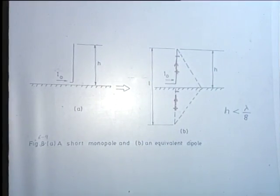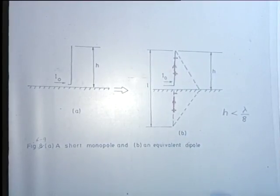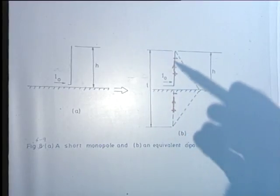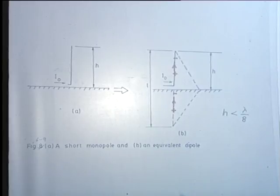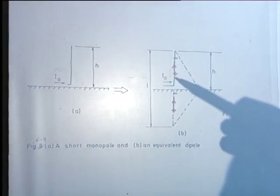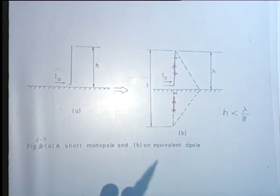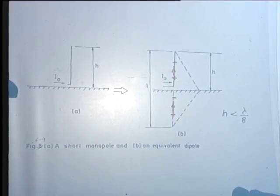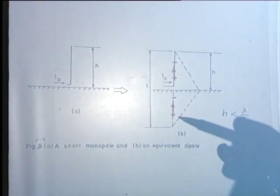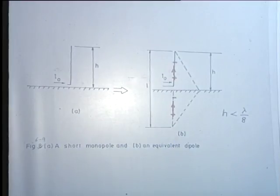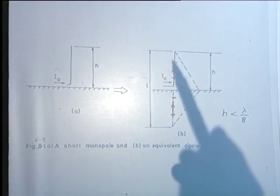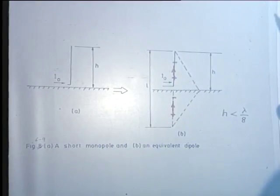A student asks about the image of the negative charge. Applying the image principle: the image of the positive charge is below the surface with opposite sign, and the image of the negative charge similarly gives current direction from positive to negative, which remains the same. Alternatively, the fields radiated from the actual antenna and those reflected from the earth's surface are simulated by this image of the antenna — the two points of view are identical.